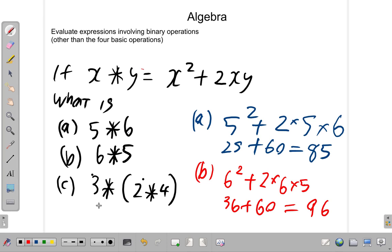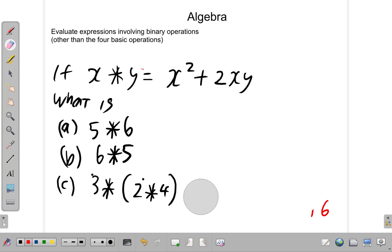Let's look at part C now. Part C. 3 star 2 star 4. You do what is in the bracket first. So, you're going to have 2 star 4.